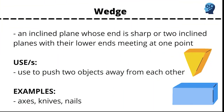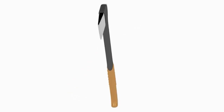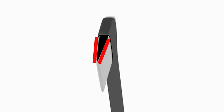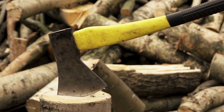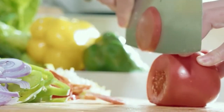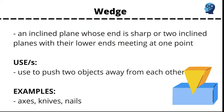Wedge. An inclined plane whose end is sharp, or two inclined planes with their lower ends meeting at one point. Used to push two objects away from each other. It has a sharp edge that can split things apart. Axes, knives, and nails are examples of wedge.